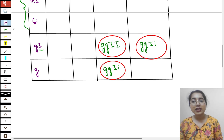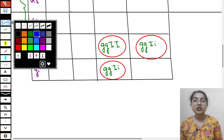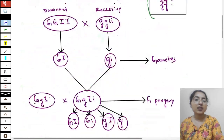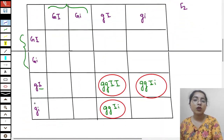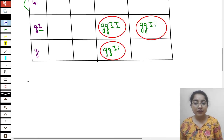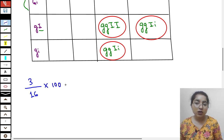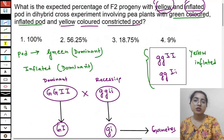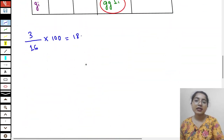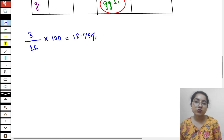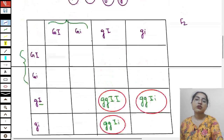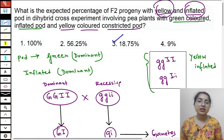From these three, we have to find the percentage. Total is 16. Three came out as yellow and inflated. So 3 out of 16 — how much percentage is that into 100? 18.75. The answer is 18.75%. The third option is the correct answer.